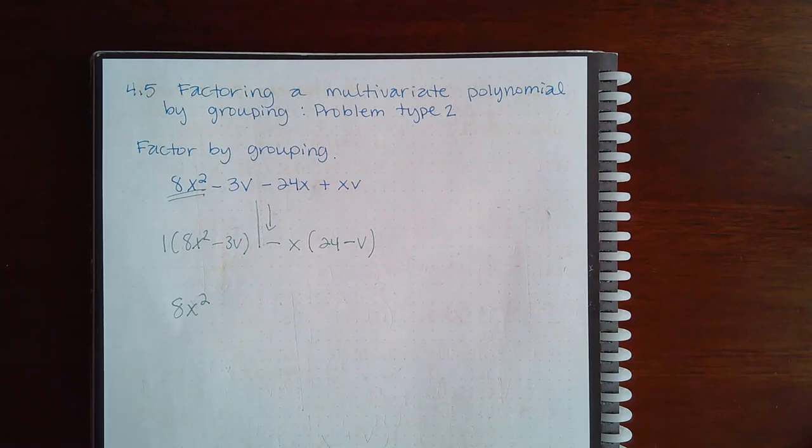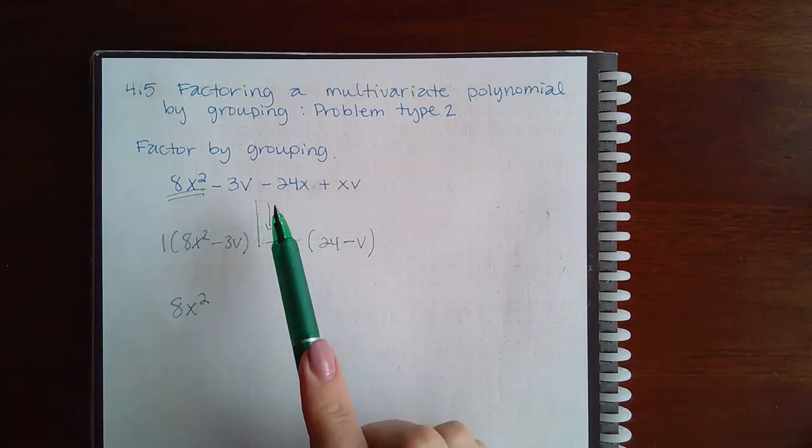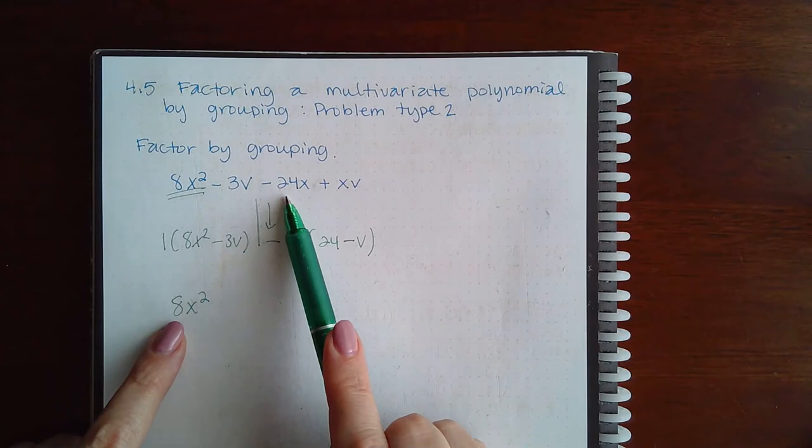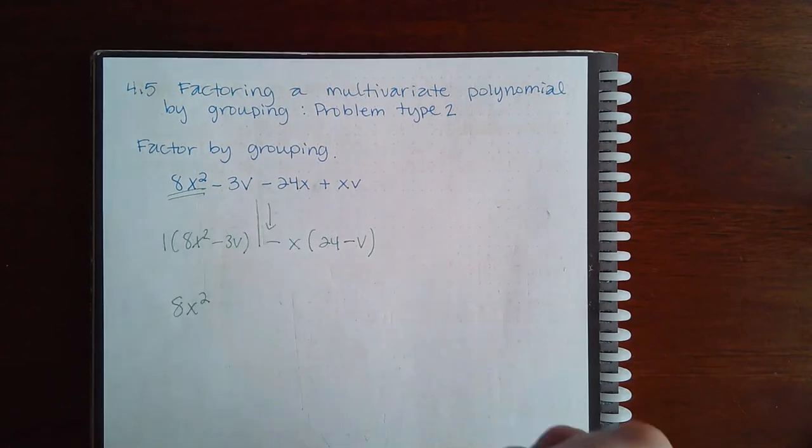It really doesn't matter which one you choose as long as it has something in common with 8x squared. I noticed that 8 and 24 can both be divided by 8, so I'm gonna choose that one to go next.